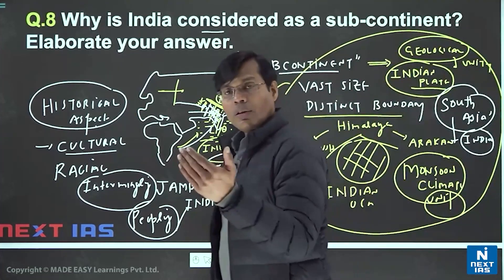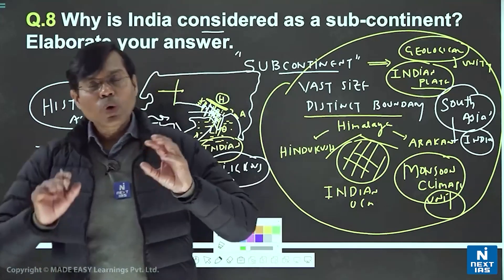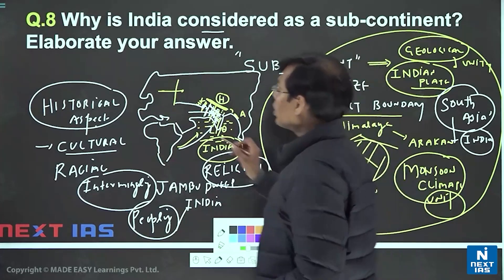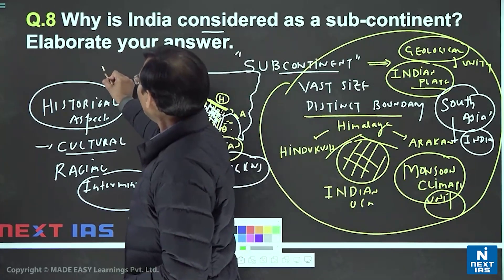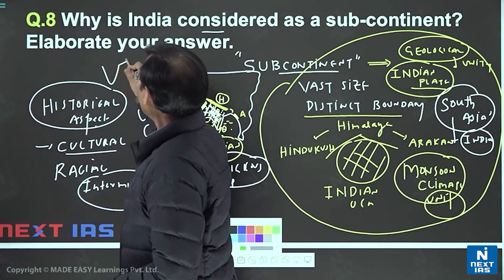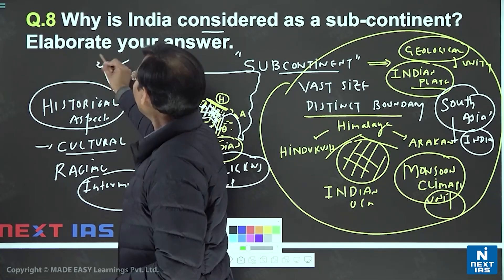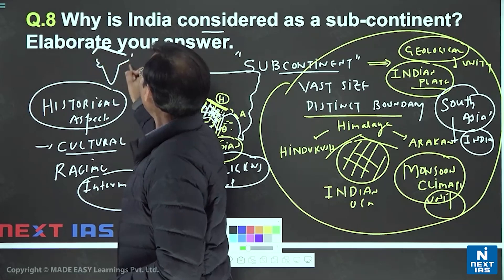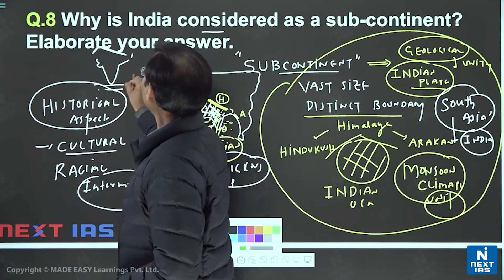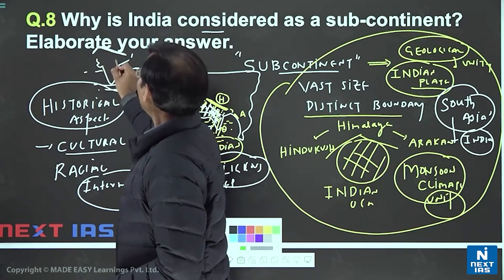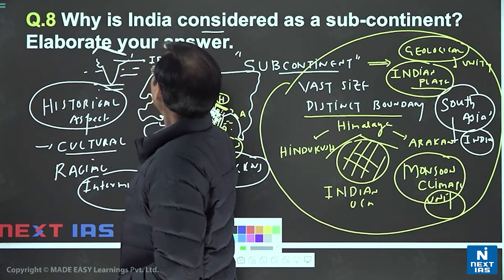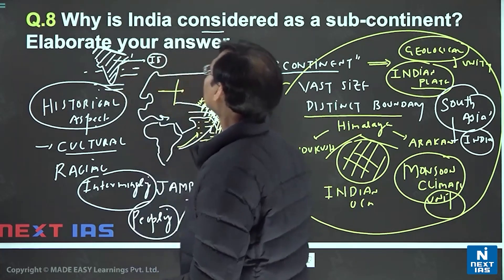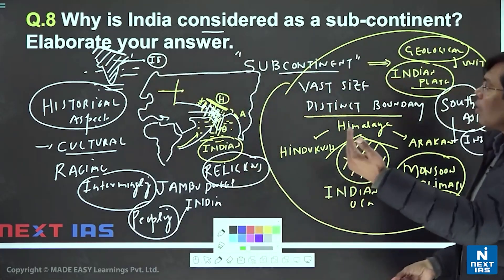For your answer, three to four points will be enough. For the diagram, draw a V-shape, then add the Himalaya and other mountains, and mark the water bodies. Label it as the Indian subcontinent. This diagram along with the key points will be sufficient for a complete answer.